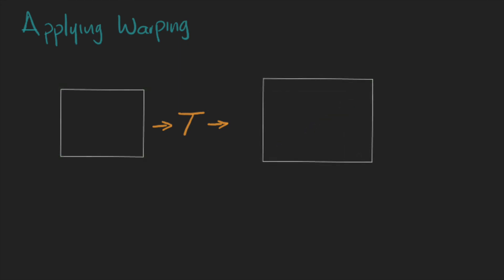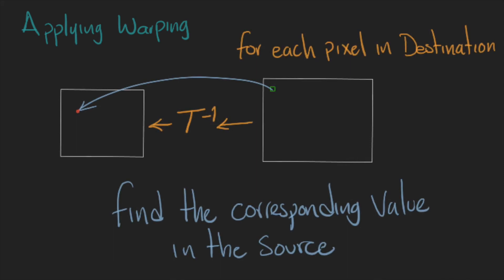Now, we are going to loop over the new image and we are going to use the inverse warping to find the corresponding point in the input image. In this way, we are always going to find a value.